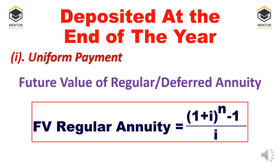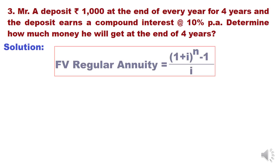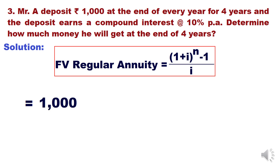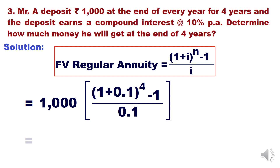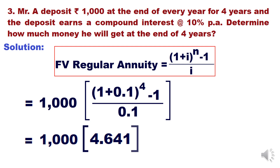The uniform payment can also be calculated using the future value of regular or deferred annuity formula: FV = R × [(1+i)^n - 1] / i. I want to emphasize that this formula is also used to prepare the future value of annuity table. Applying it to our problem: FV = 1000 × [(1+0.1)^4 - 1] / 0.1 = 1000 × 4.641 = 4641. We get the same answer as before, confirming both formulas are equivalent.